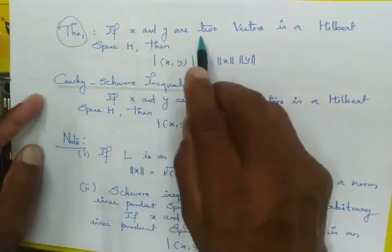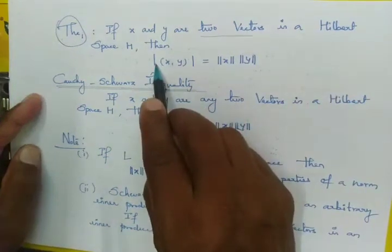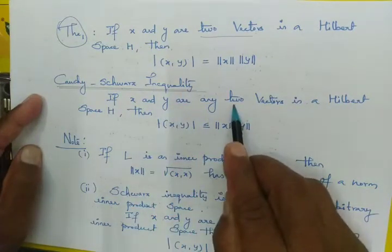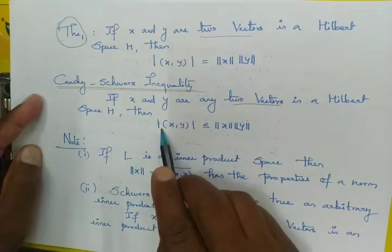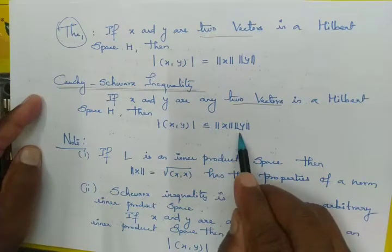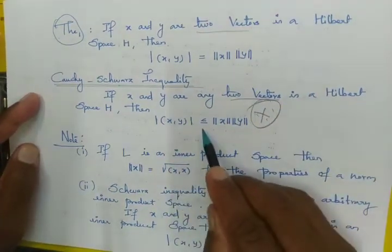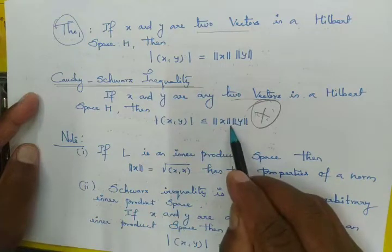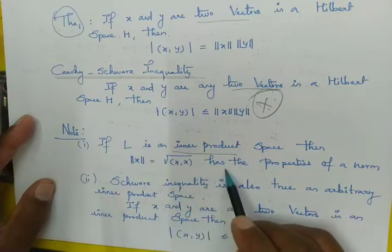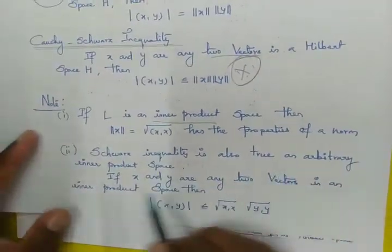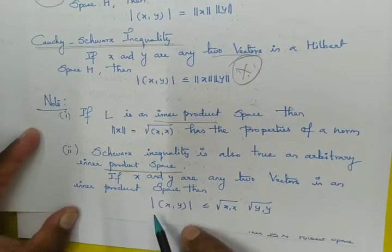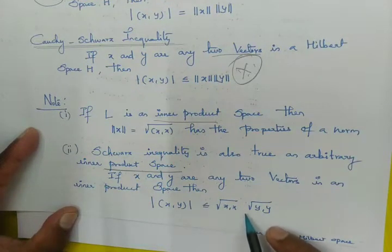If x and y are two vectors in Hilbert space, then the absolute value of (x, y) is less than or equal to the norm of x times the norm of y. This is the Cauchy-Schwarz inequality. This inequality is also true in an arbitrary inner product space: if X and Y are any two vectors in an inner product space, then |⟨X, Y⟩| ≤ √(X, X) · √(Y, Y).